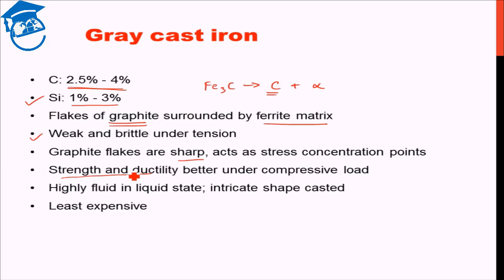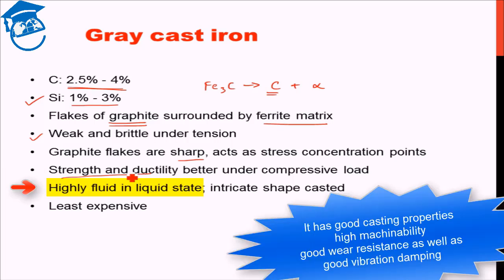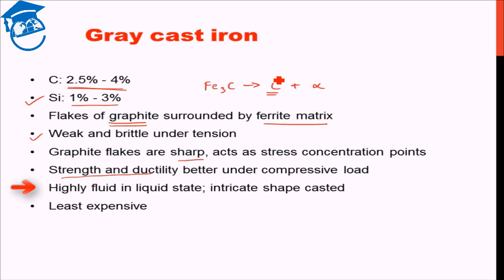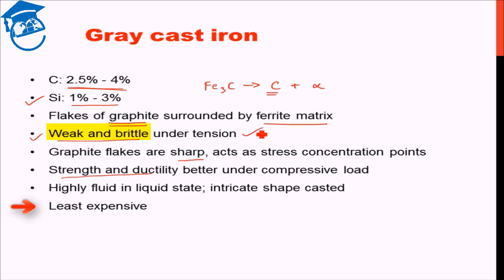Gray cast iron in the liquid form is very fluid — highly fluid. Therefore gray cast iron can be used to form intricate shapes; being fluid it can pass through intricate details of the shape that needs to be cast. In addition, economically speaking, gray cast iron is the least expensive kind of cast iron. The main disadvantage is that it is weak and brittle under tension.